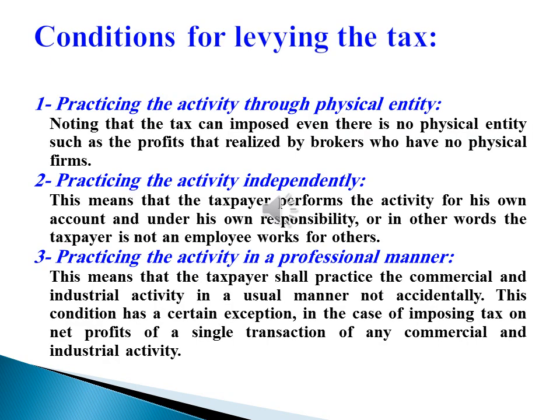Conditions for the tax to apply: Condition 1 — Practicing the activity through a physical entity. Note that the tax can apply even if there is no physical entity, such as the profits realized by brokers who have no physical firms. Condition 2 — Practicing the activity independently. This means that the taxpayer performs the activity for his own account and under his own responsibility, or in other words, the taxpayer is not an employee working for others.